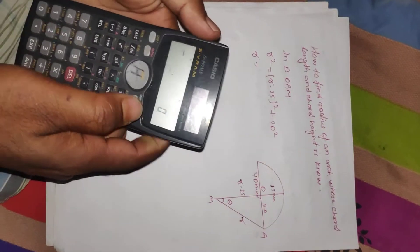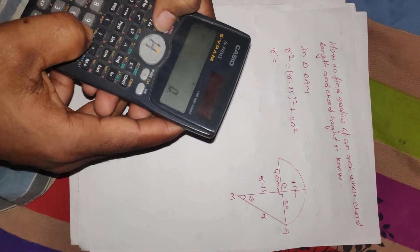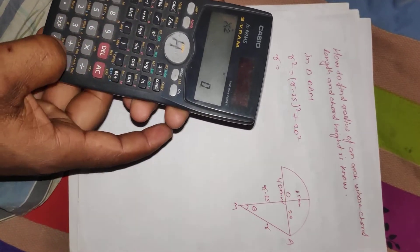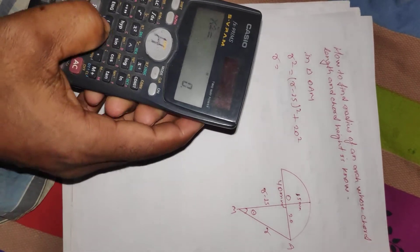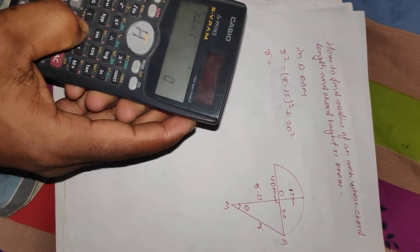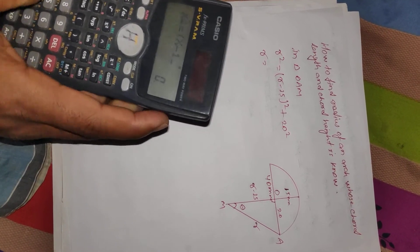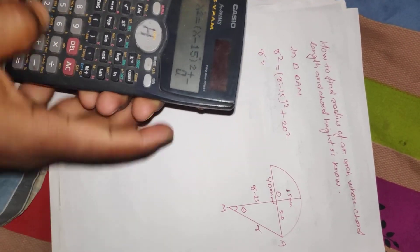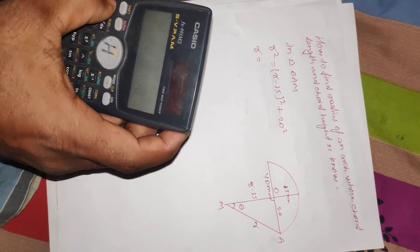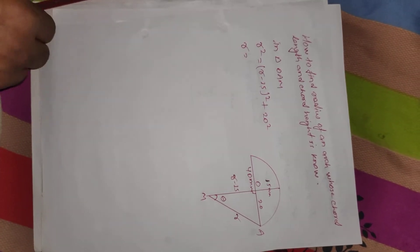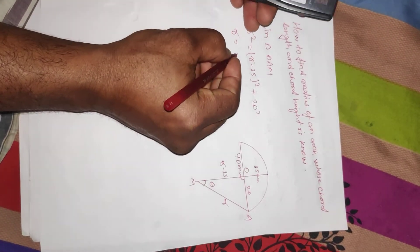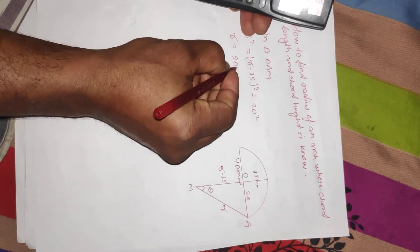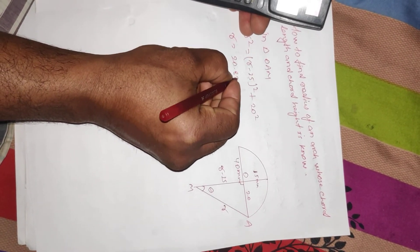X square equal X minus 15 square plus 20 square. Shift solve, shift solve. 20.83. R will be 20.83 mm.